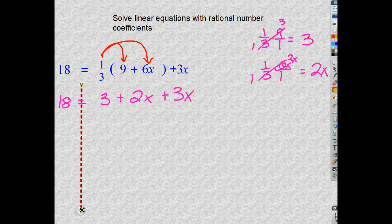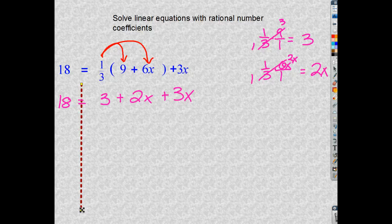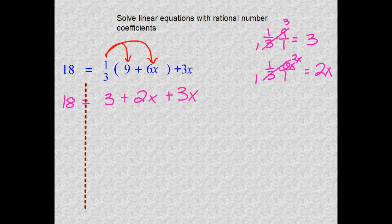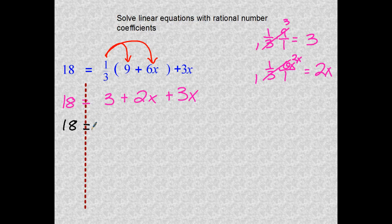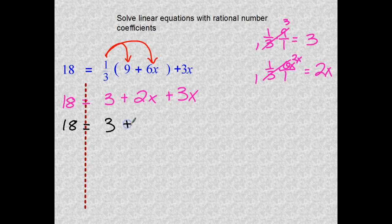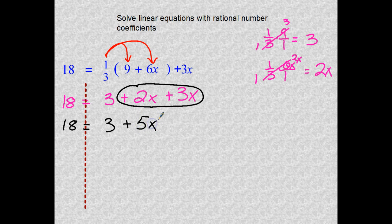Let's get the wall going. Looking for like terms to put together. Nothing on the left to put together yet. However, on the right I see some X's once again, so let's get those guys together. 18 is equal to three, and put this together: positive two plus three is positive five X.